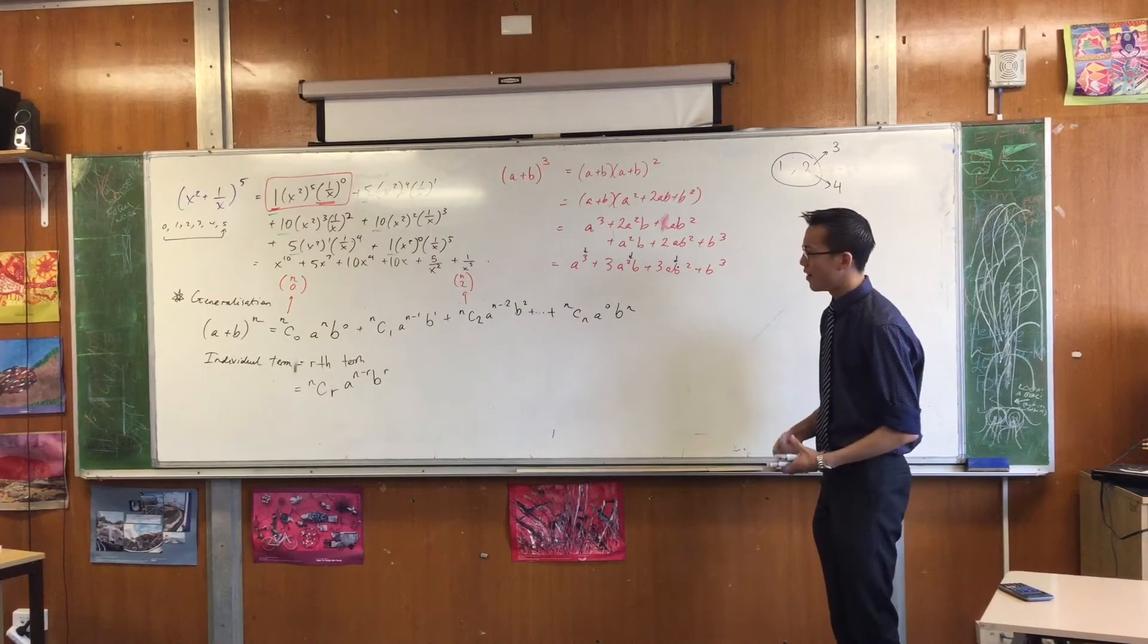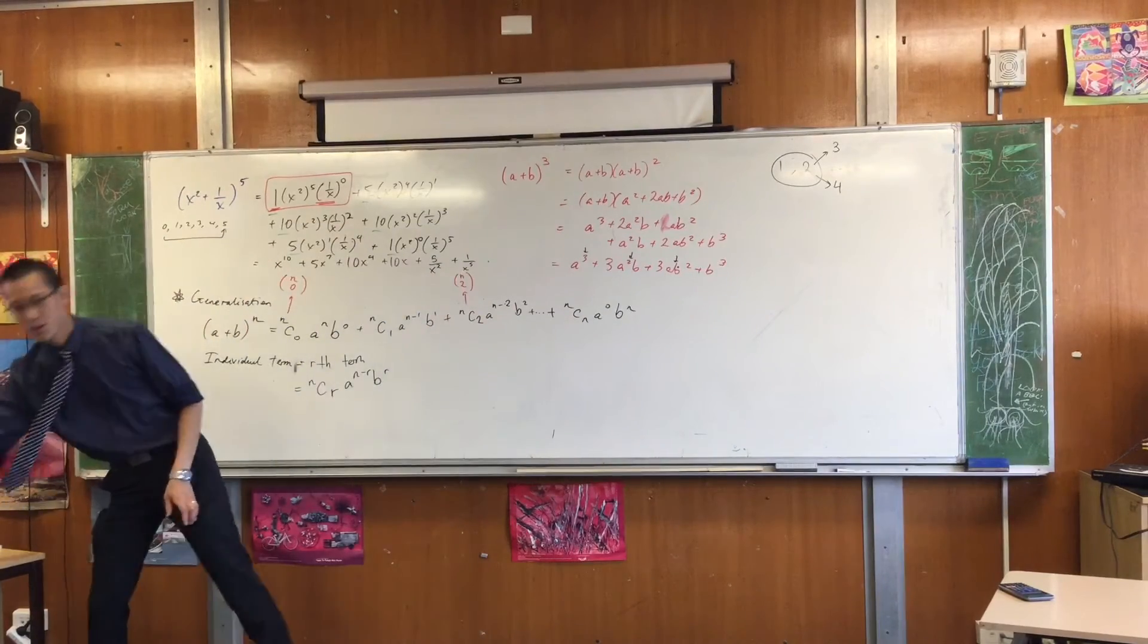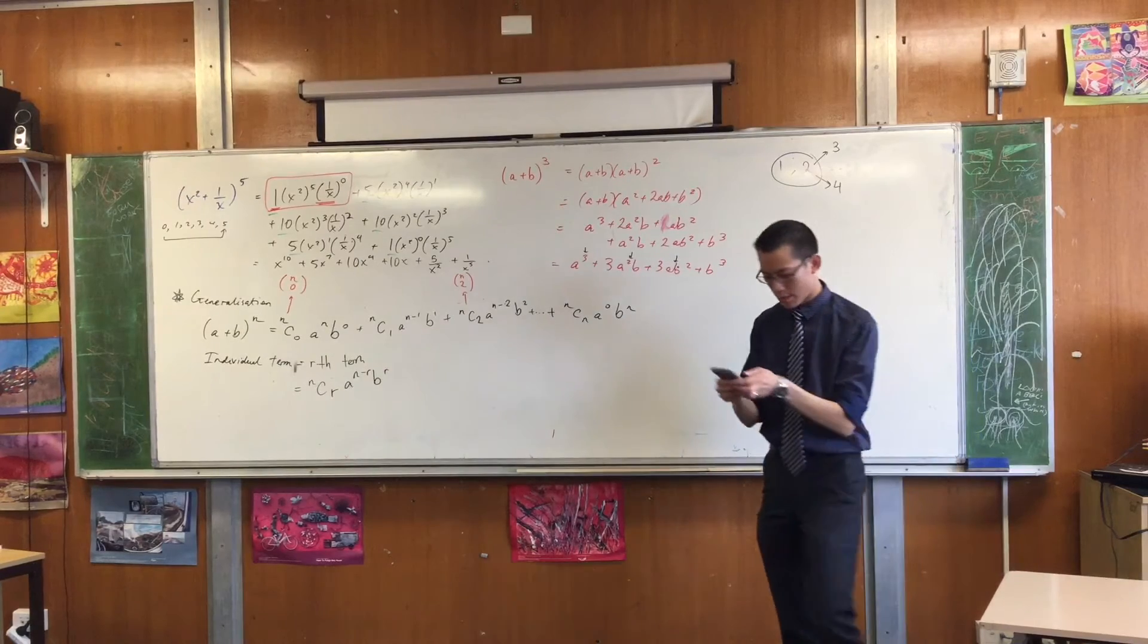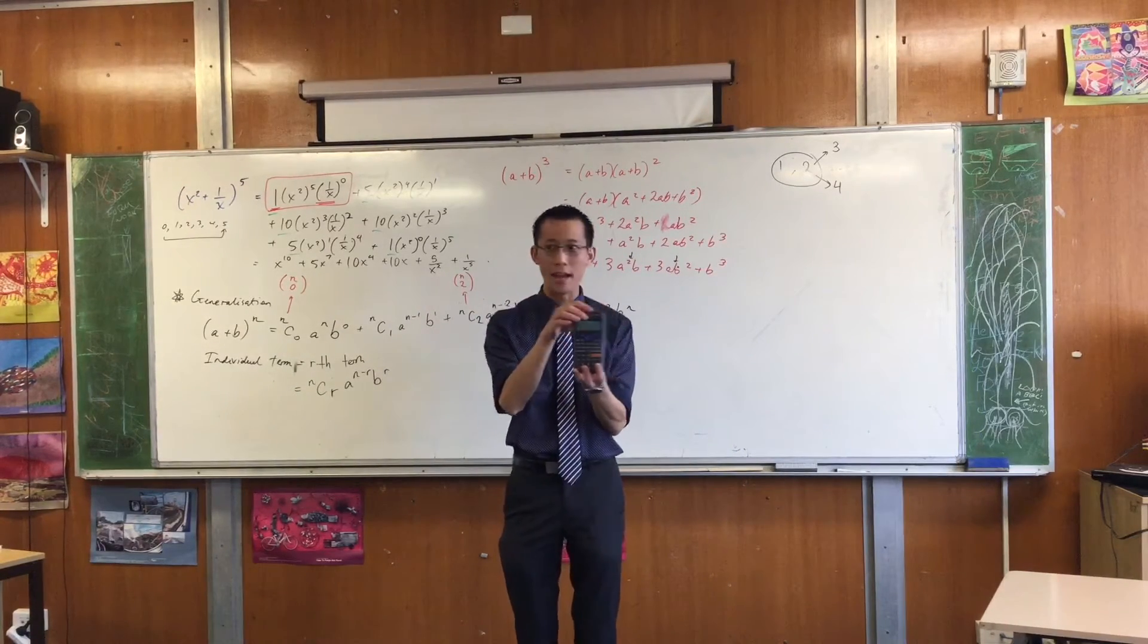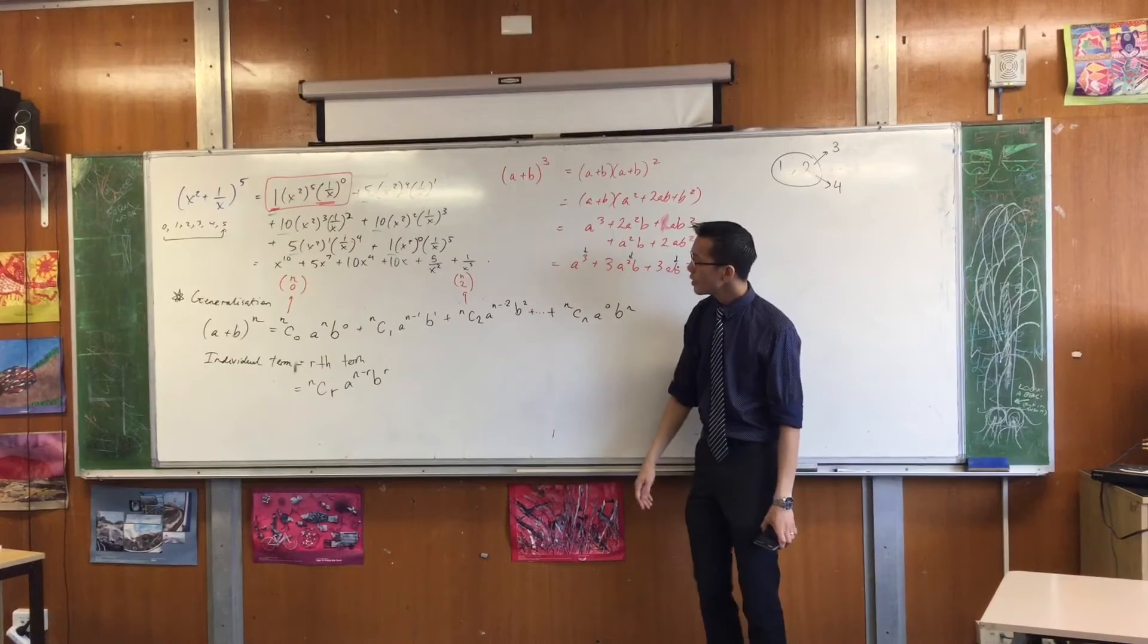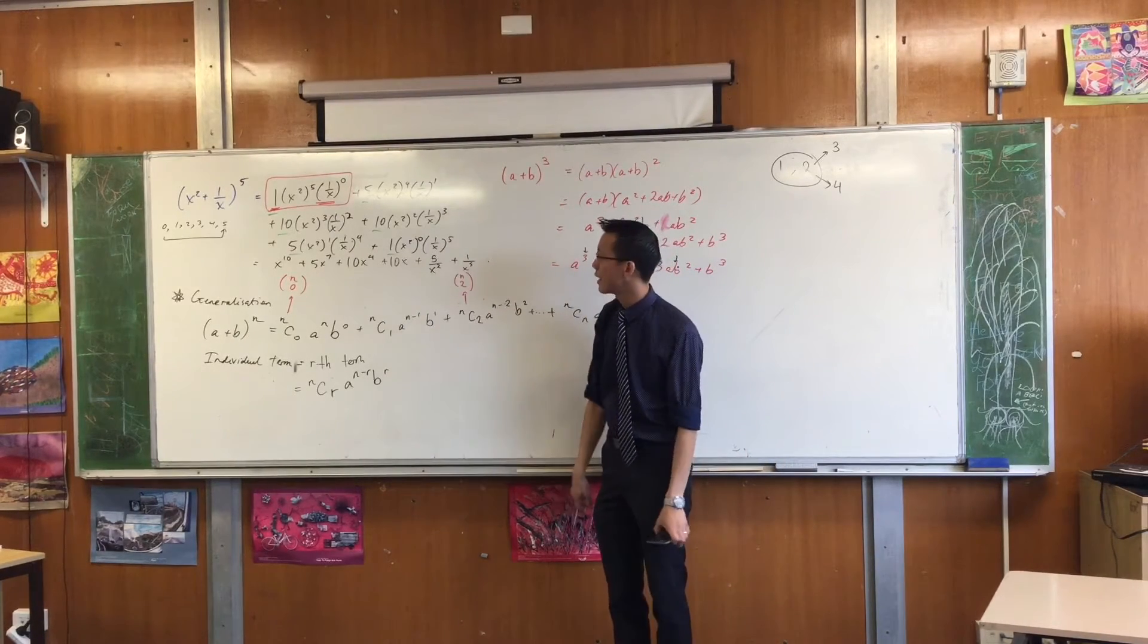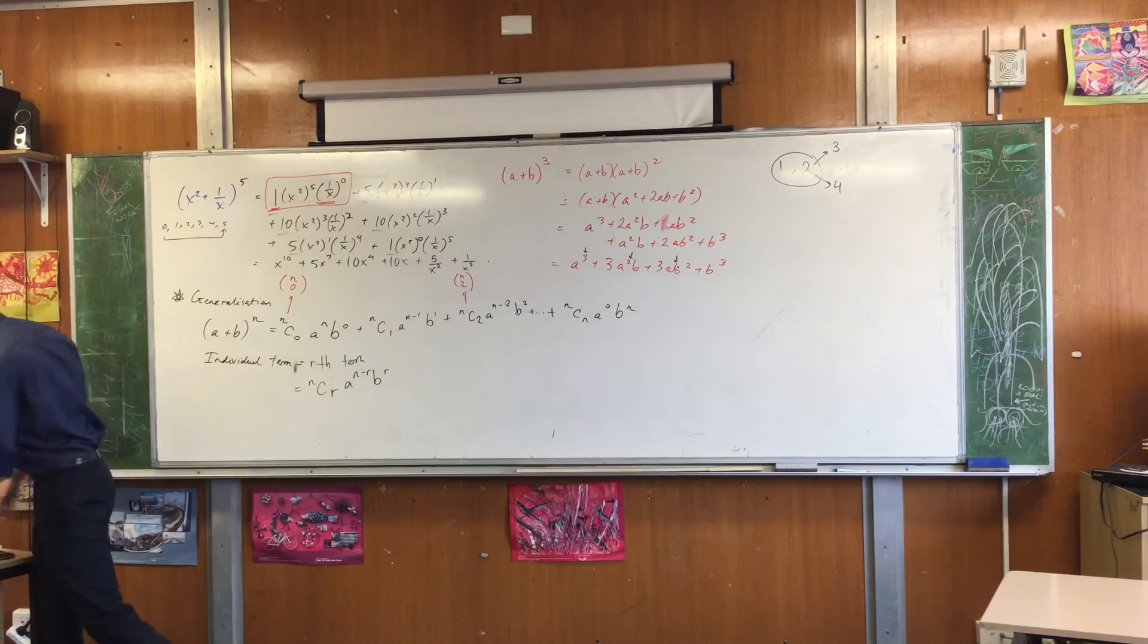There you go. Now I said that we were introducing this so that you could use your calculator. So this N, C, R notation, that's actually what it's called, you'll see it above the division sign on your calculator. So let's just test this out. We already know what some of these coefficients are. I want you to have a look at this one here that we did with the power of 5. We can actually write each of these and if you've got your notes there, let's do it like this.